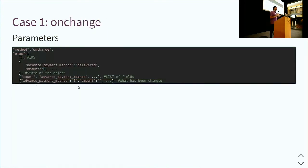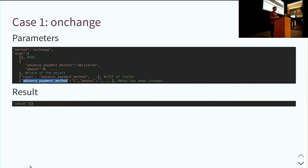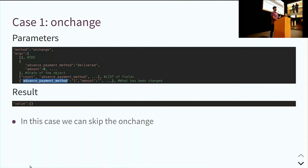The onchange is a bit complicated because as a back-end developer we never use this method directly — it's a wrapper to call compute fields and onchange functions in the right order. What the web client sends: first the list of IDs (empty in this case because the record doesn't exist yet), then the state of the object from the web client's perspective, then the list of all fields and the list of fields that have been touched. In this specific case, the result is really interesting — it's empty. This means you can completely skip the call to onchange, and for both onchanges it was empty. So that's something we don't have to do.